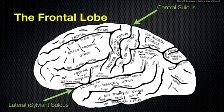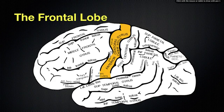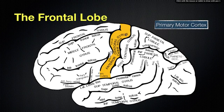This here would be the frontal lobe. The first thing I want to talk about is the section called the precentral gyrus — also called the anterior central gyrus. The function of that region is it serves as the primary motor cortex. It's getting motor signals from different parts of the brain and integrating them in this region, the precentral gyrus, where a lot of motor function is integrated.